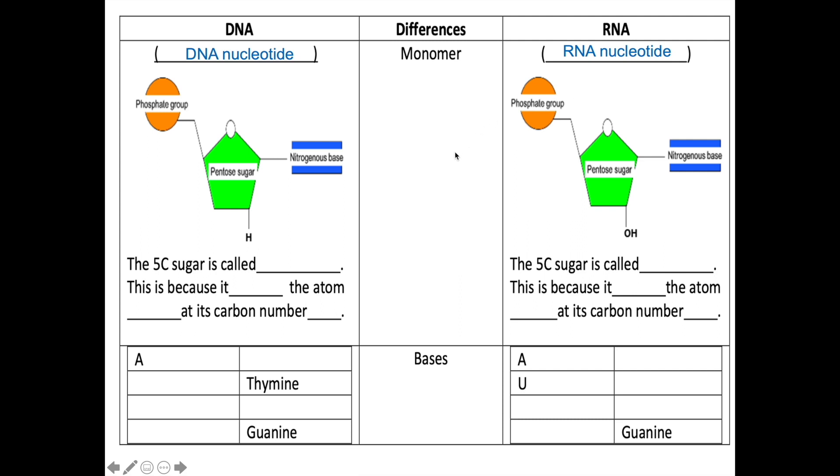So how does DNA nucleotide and RNA nucleotide differ? Firstly, they differ at their pentose sugar. As you can see, the pentose sugar within DNA nucleotide lacks oxygen atom at carbon number 2. So therefore, this pentose sugar, or this 5-carbon sugar, is known as deoxyribose. Deoxy. This is because it lacks the atom oxygen at its carbon number 2.